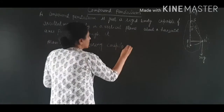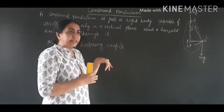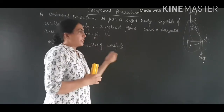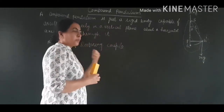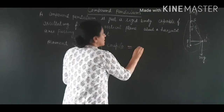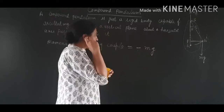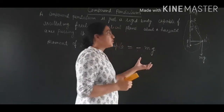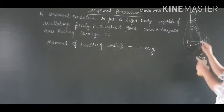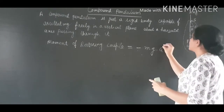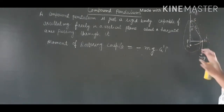The moment of the restoring couple is equal to Mg multiplied by the perpendicular distance. The perpendicular distance between the two forces is G dash P.